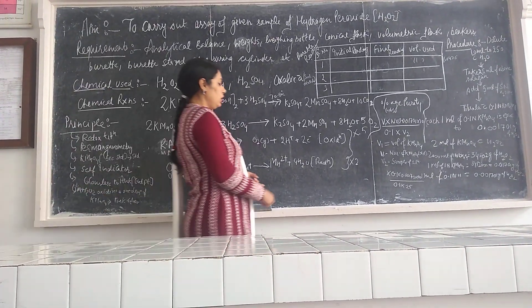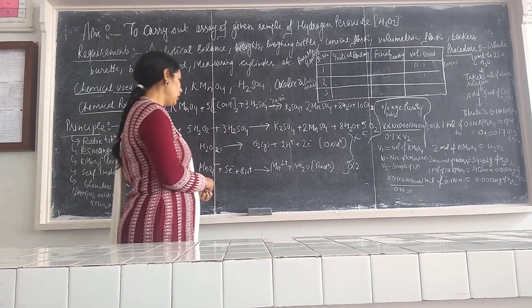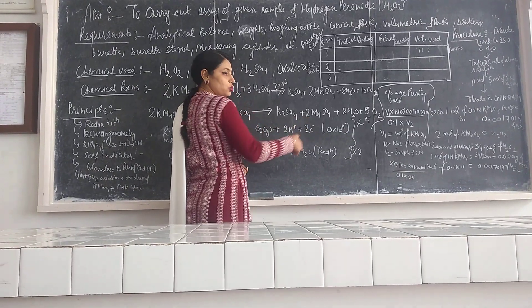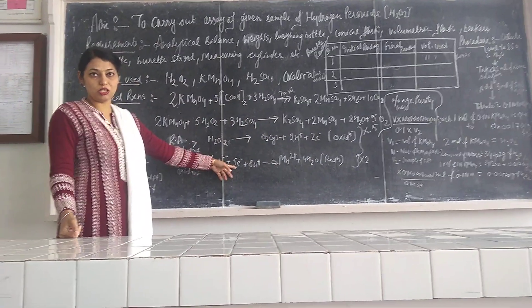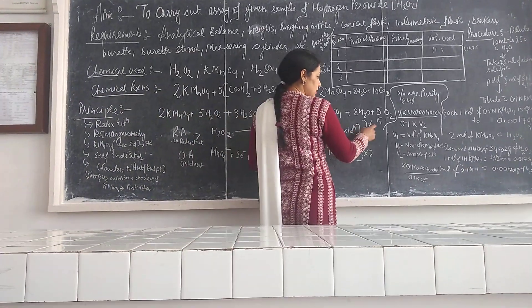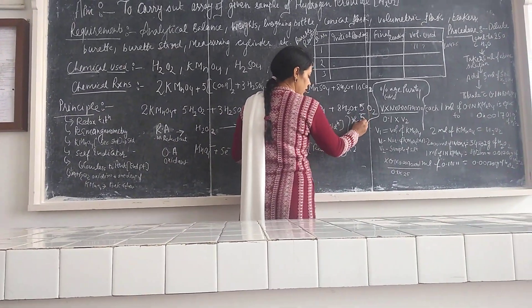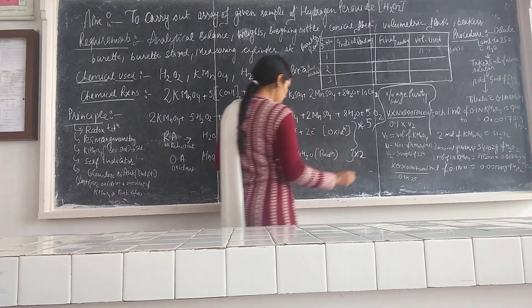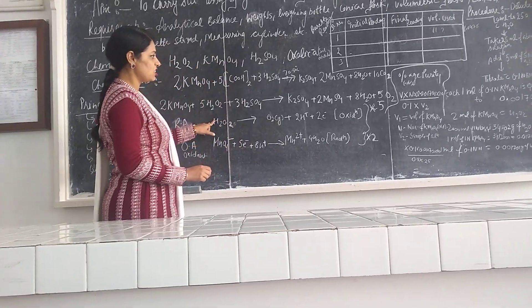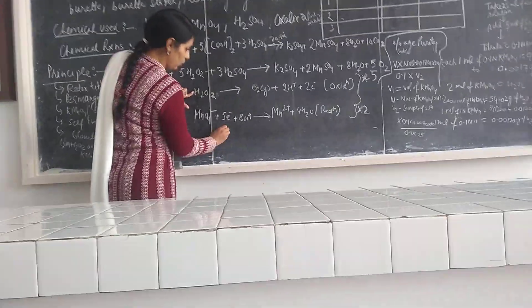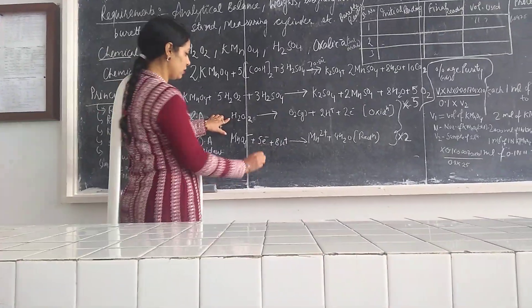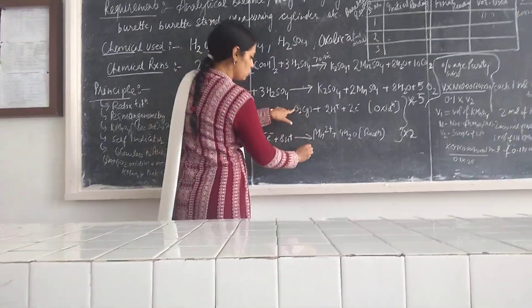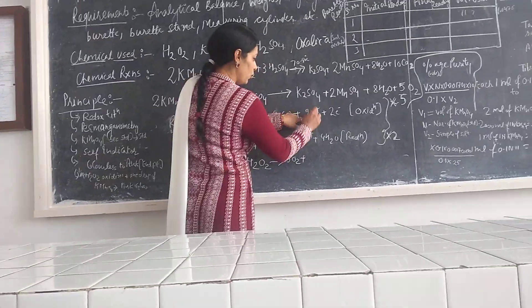So in order to balance these reactions, as we know there is a total change of charge of 2 electrons here and here there is a total change of 5 electrons. So we multiply this equation by 5 and we multiply this equation by 2 to balance. This is 5H2O2. This will give rise to 5O2 plus 2 into 5, that is 10H+ plus 10 electrons.